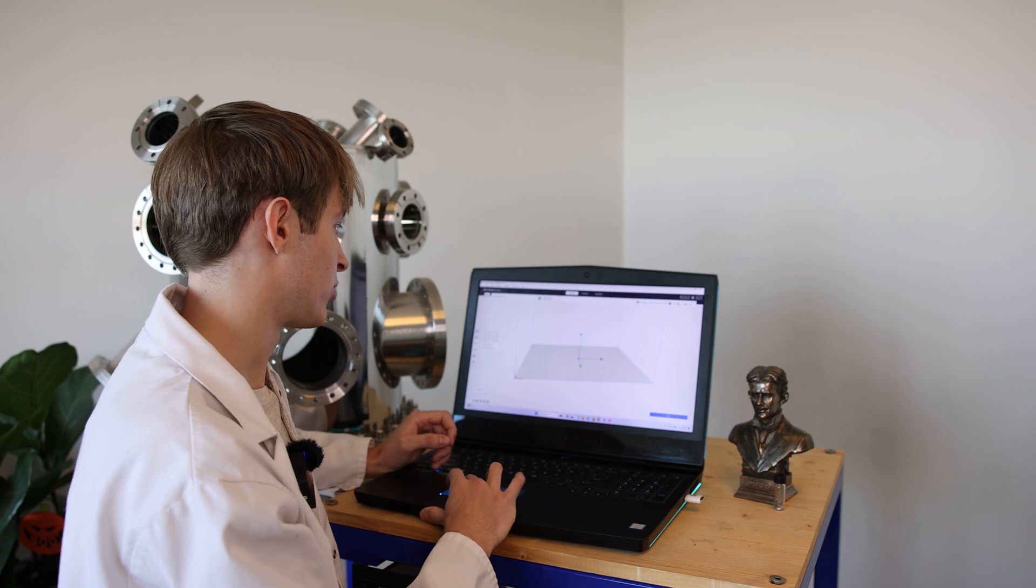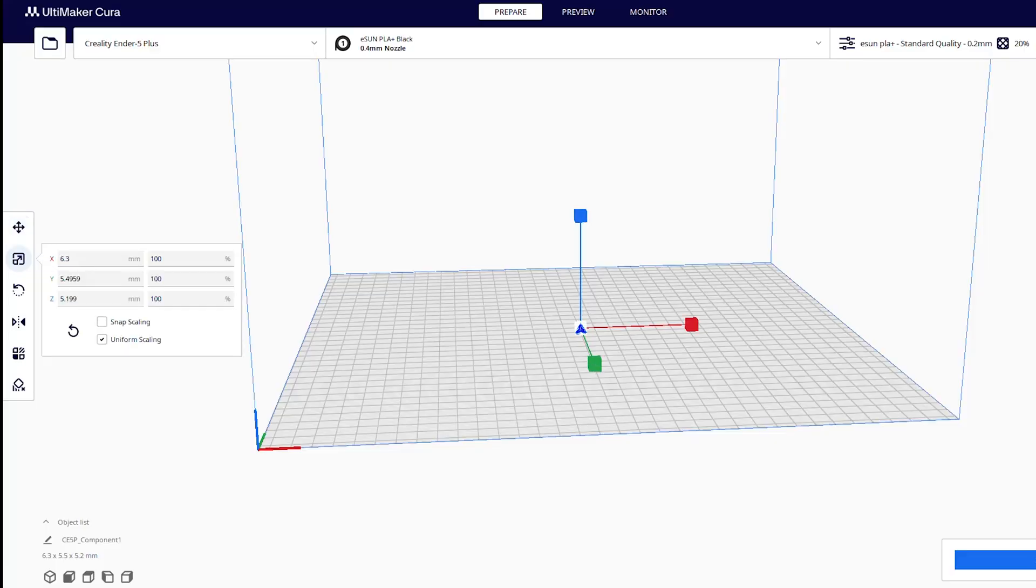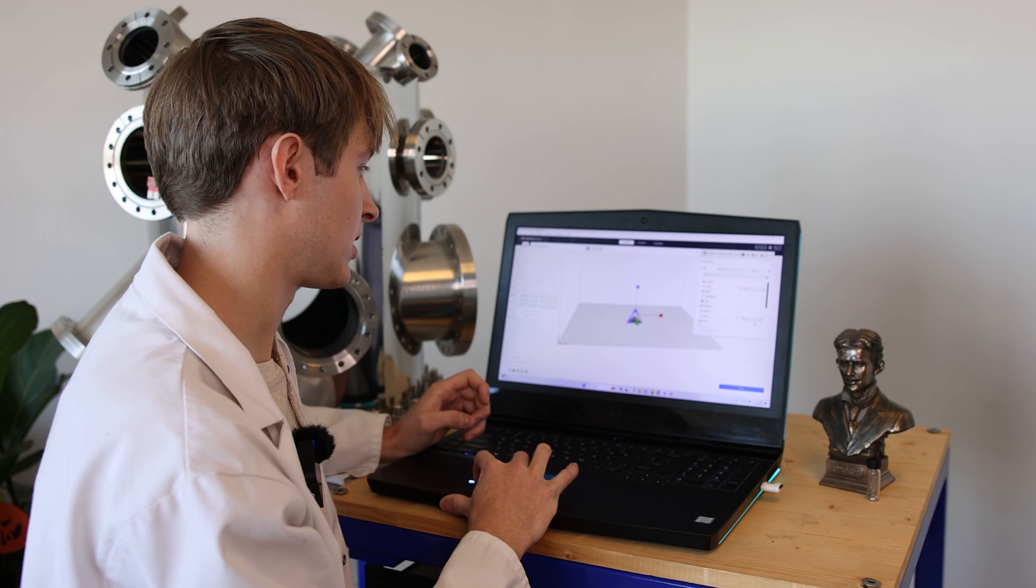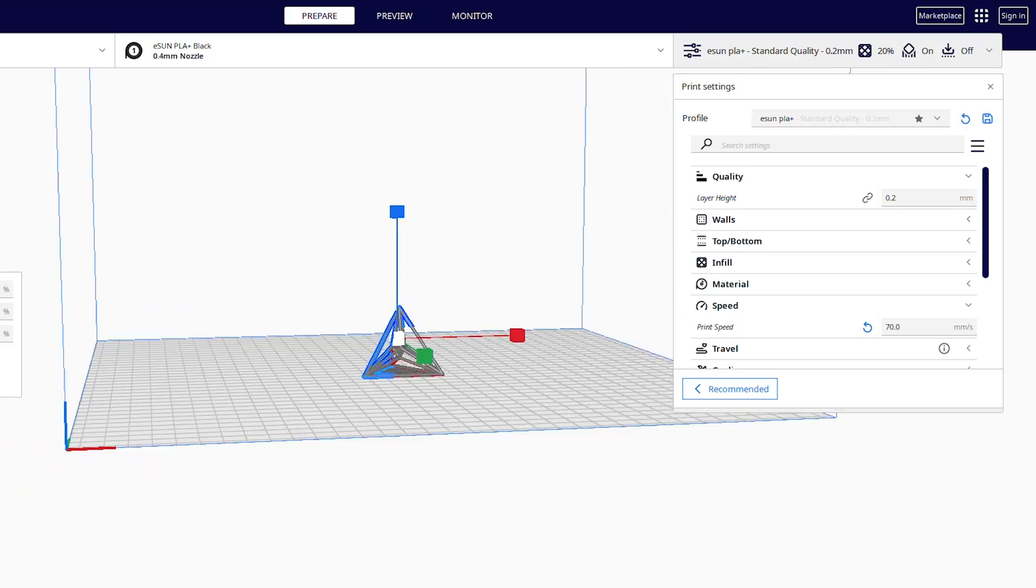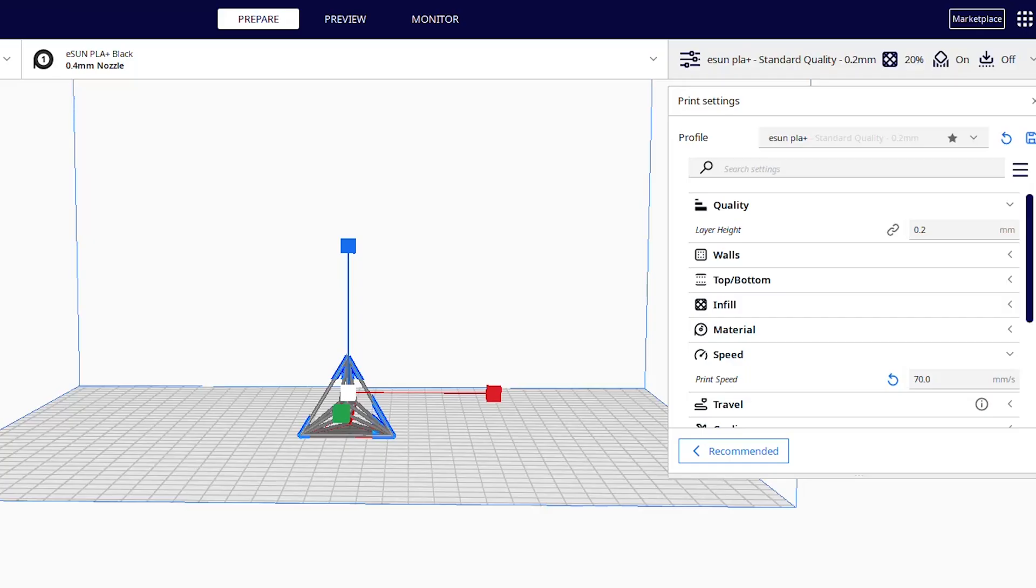Right now we are printing the orthoplex, which is also known as the cross polytope. We're scaling this to size to match the simplex and the hypercube that we've already 3D printed. It's about 50 millimeters.